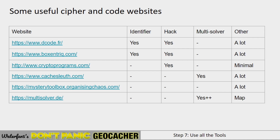Boxentriq has an identifier and a lot of other tools. Cryptoprograms primarily focuses on hacking and cracking ciphers — it has a lot of them but minimal other stuff. CacheSleuth doesn't have an identifier but has a multi-solver and a lot of other tools. Organizing Chaos doesn't have an identifier or a multi-solver, and you kind of need to always know the keywords — no hacking tools — but it has a lot of other things available. Multi-solver has a very powerful multi-solver and also a great map tool.